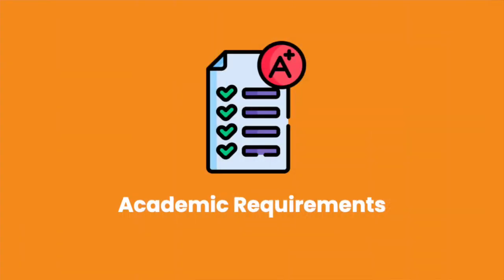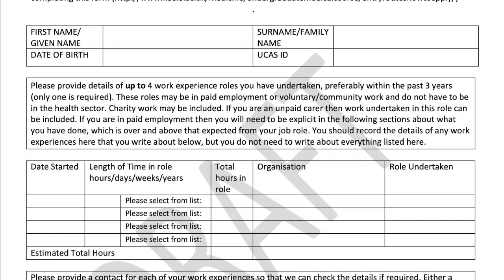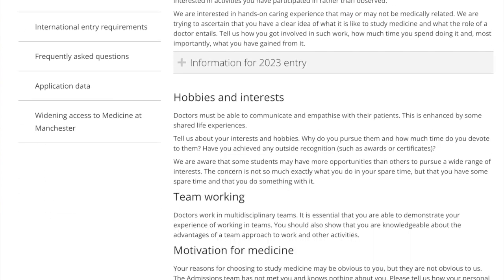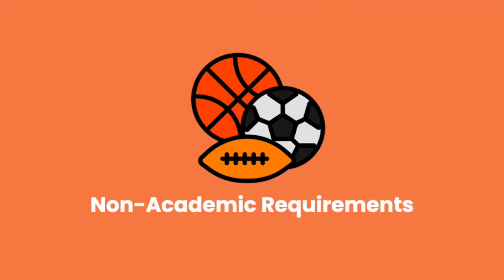Another very important question to ask at open days is about academic requirements — your A-level grades, GCSE requirements, and UCAT exam requirements. Different universities have different cut-off grades, so it's important to ask about each one specifically. It's also extremely important to ask about any additional examinations or tests, such as specific skills tests or a roles and responsibilities form you might have to complete.